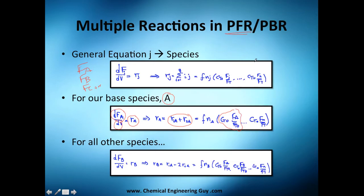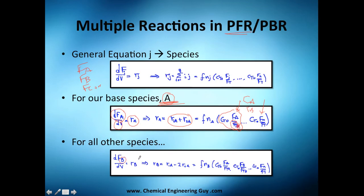This setup is for gas phase using a PFR. If it were liquid phase, it simplifies to concentrations of A, B, etc. as a function of concentration only, not flow rates. For the other species — B, C, D — the structure is exactly the same: the differential of the flow rate with respect to volume equals the rate of reaction of that species.